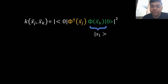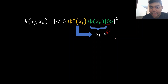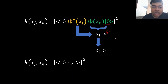Let's consider the green part again. Circuit Phi is a quantum circuit; we execute circuit Phi on |0⟩ and we get some state s1. Then we execute circuit Phi-dagger on state s1, and we get some state s2. What I've done now is rewrite this kernel function with respect to state s2.